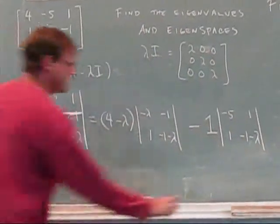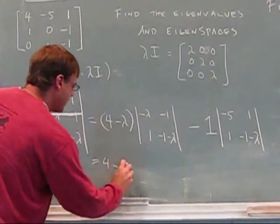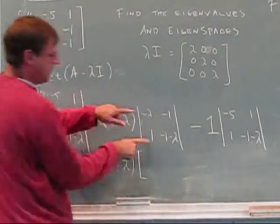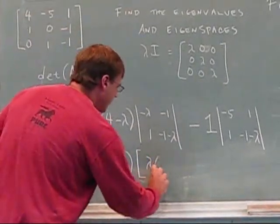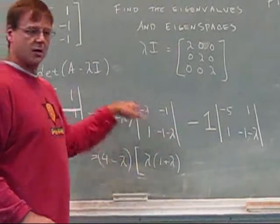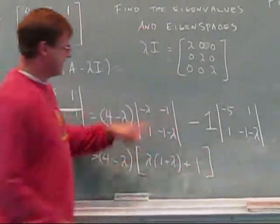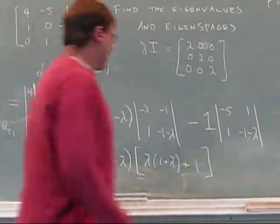So then I have 1 and then negative 1 minus lambda. Okay, let's calculate these things. This one here is 4 minus lambda times, these negatives all cancel. So this times this is lambda times 1 plus lambda. When I do this, the negatives all cancel, and then plus 1. It's minus a negative 1 coming back, so I get a plus 1.